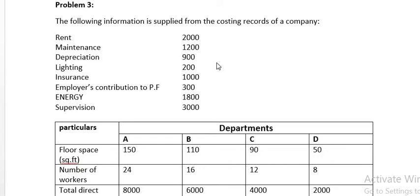Hi students, in this video I am going to explain the third problem from the primary distribution method. The following information is supplied from the costing record of a company: rent, maintenance, depreciation, lighting, insurance, employers' contribution to the PF amount 300, energy and supervision. These are the overhead expenses.